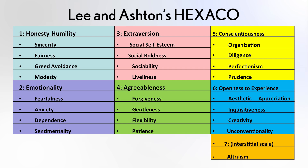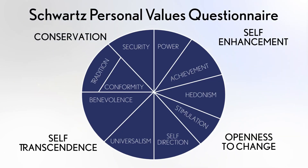The second instrument is the Schwartz Personal Values Questionnaire, resulting from the research of Shalom Schwartz, regarded as one of the world's leading researchers on values. This diagram shows ten components of Schwartz's personal values questionnaire. People in any culture possess these values to a greater or lesser degree, though individual variation is enormous. The question is: could a combination of values and personality predict whether a person is likely to demonstrate emotional intelligence?